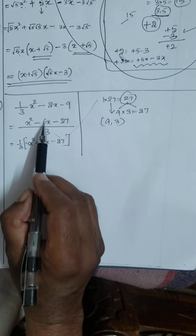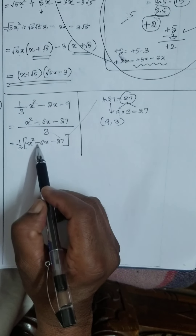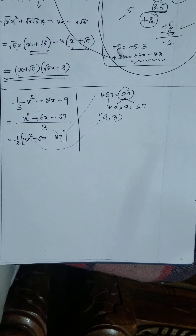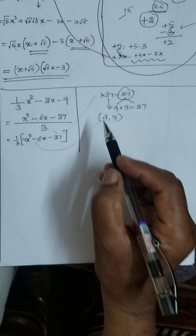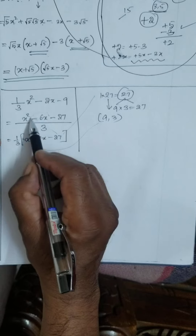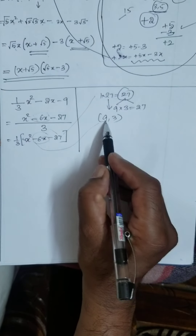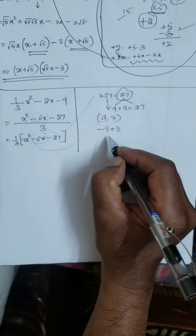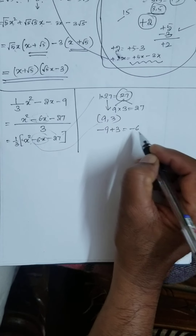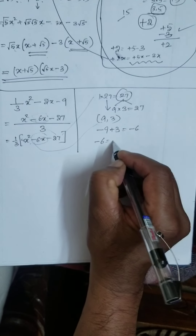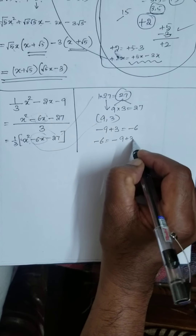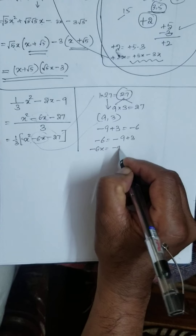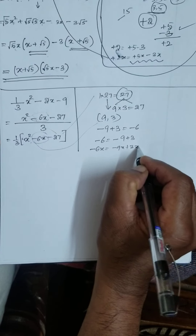Now I want minus 6. Out of 9 and 3, how to get minus 6? The best thing is: minus 9 plus 3 gives minus 6. That is, minus 6 is equal to minus 9 plus 3. Your minus 6x is equal to minus 9x plus 3x.